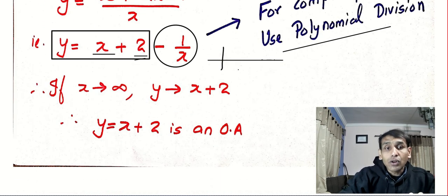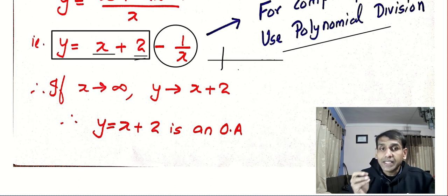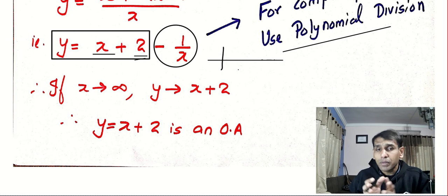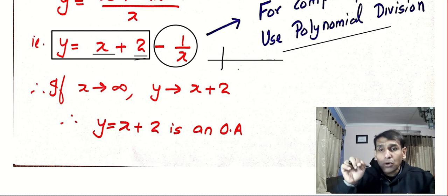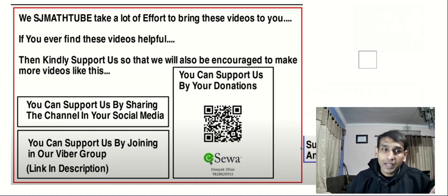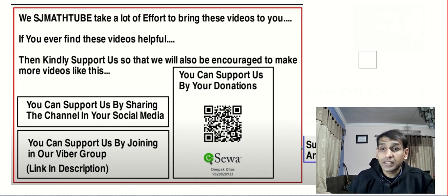Work out more problems. I will be back with more problems on rational functions and we will start with the next technique called asymptotes for the implicit function — that is more important because it will give you 4 marks. You can support us by sharing our channel on social media and by joining our Viber group. I will be back with another video very soon — till then, bye friends.